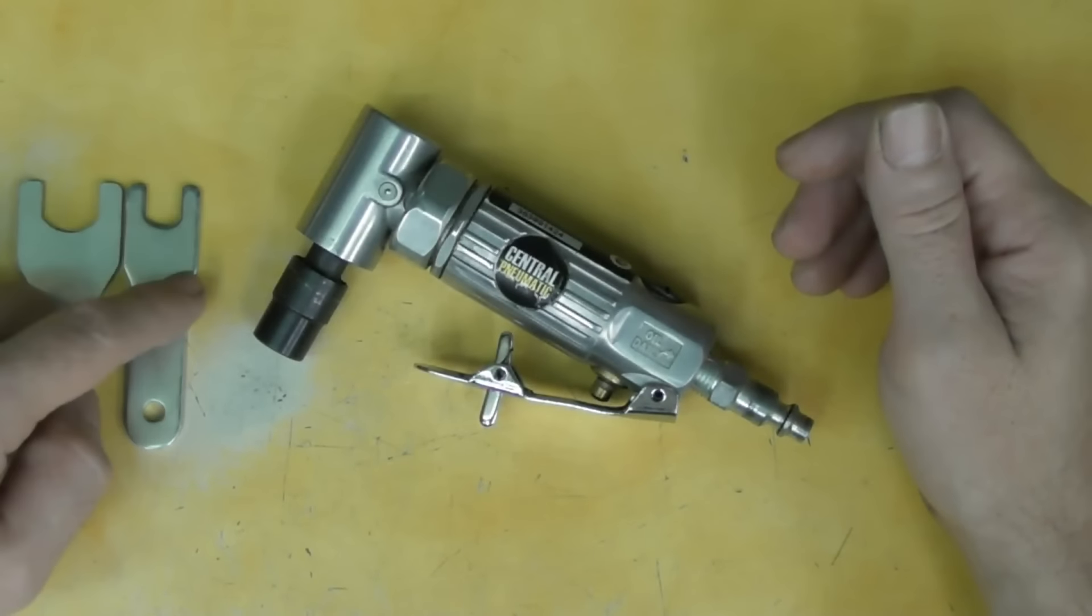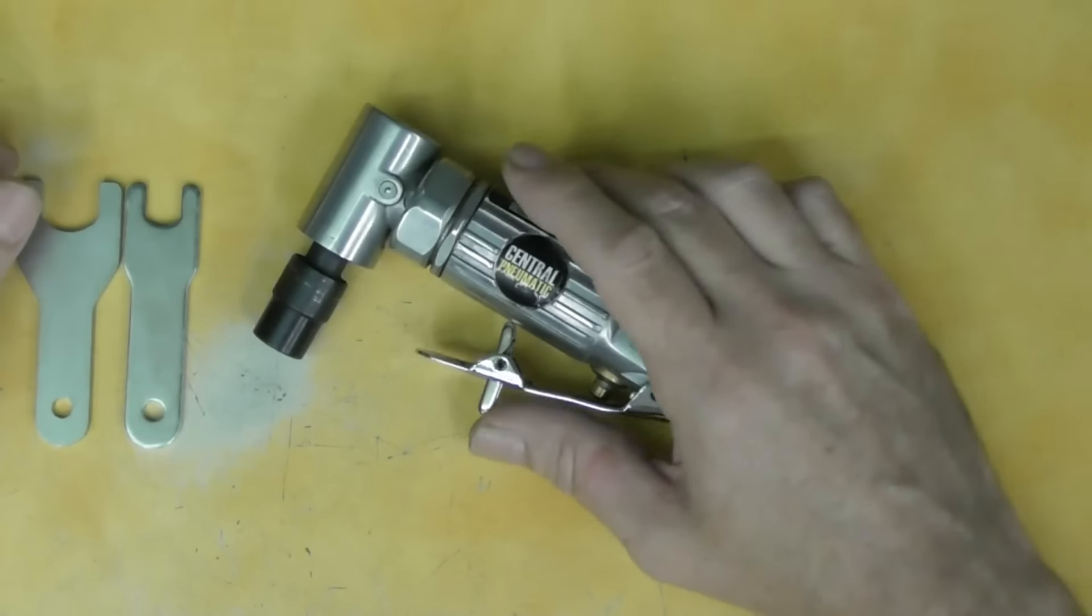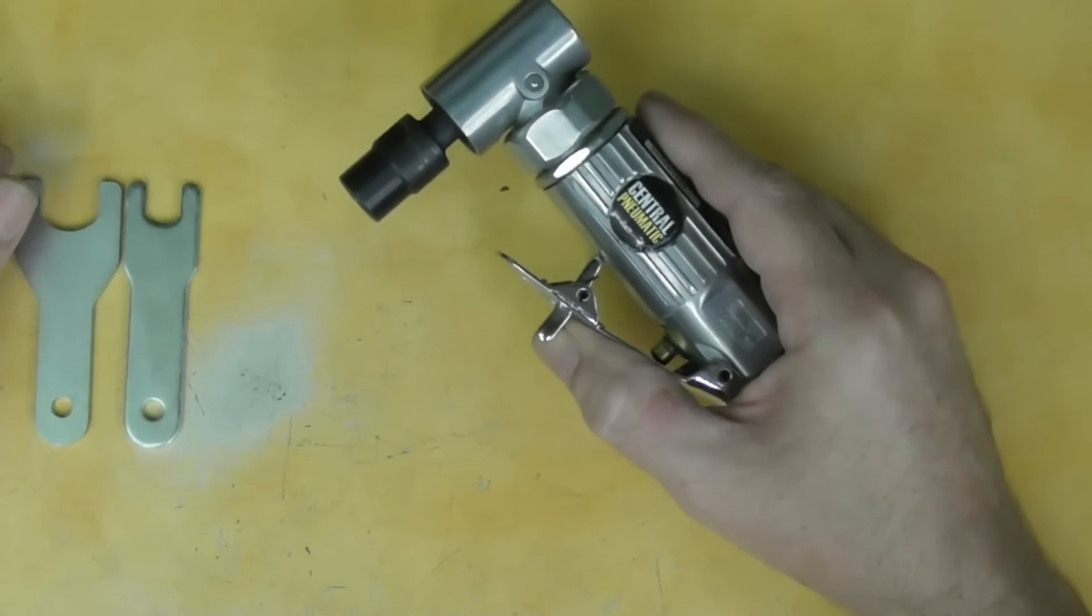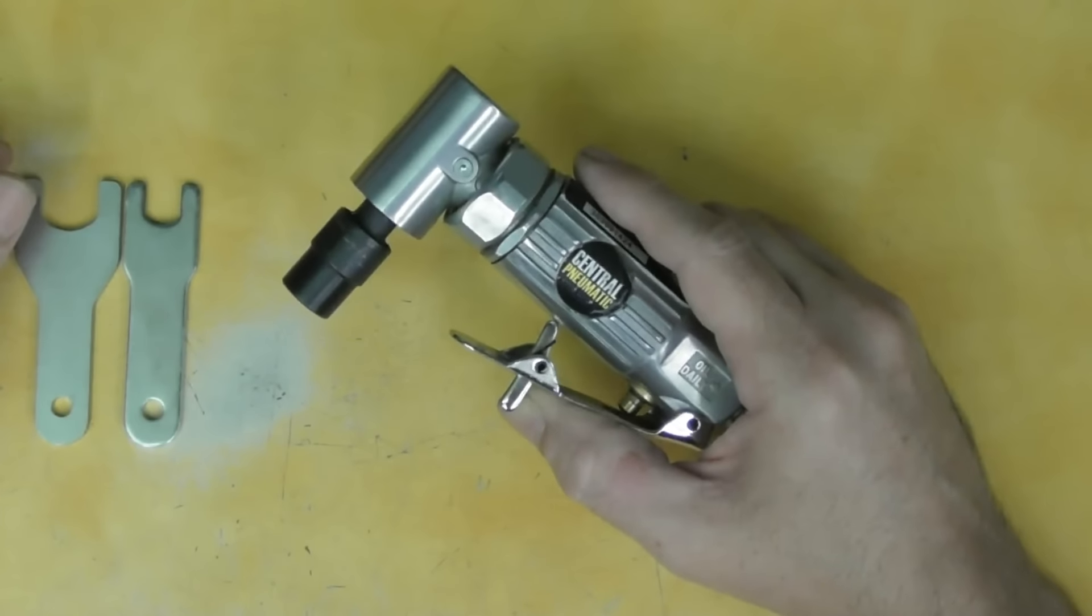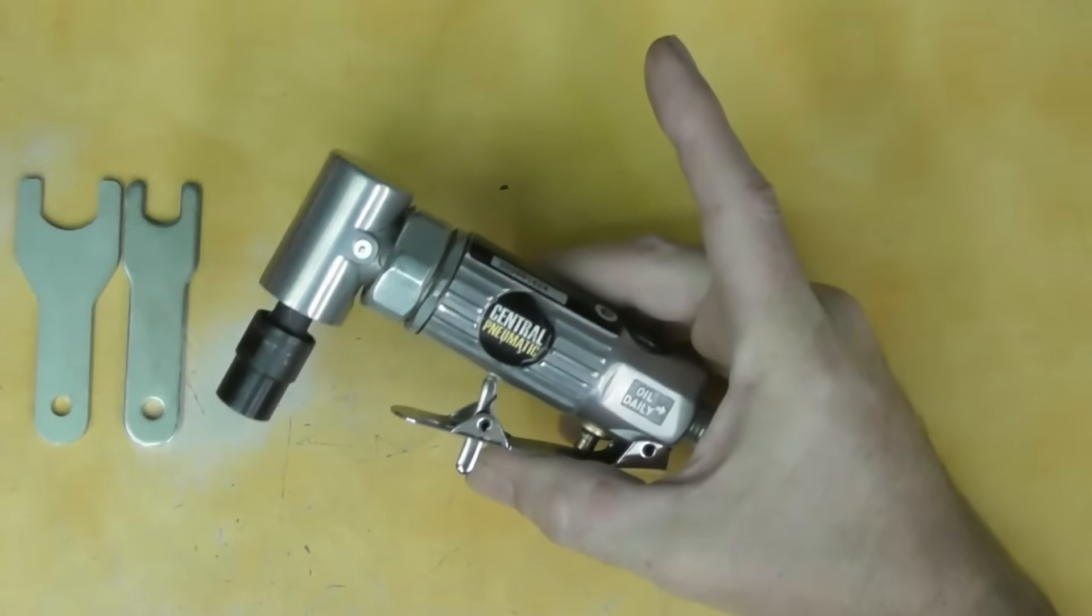It does come with two wrenches and they work well enough for the collet, no complaints there. This thing will spin up to a max of, I believe, 20,000 RPM, so it really gets it going. It is a little bit loud, maybe a little louder than my Mac that is about this same size for an air motor, but I can't complain about it.